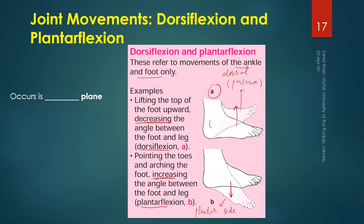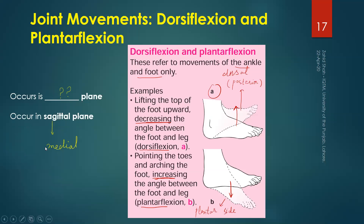You can say that dorsiflexion is basically a form of flexion and plantar flexion is a form of extension, but these specific terms are used for these foot movements. In which plane do dorsiflexion and plantar flexion occur? The answer is the same plane in which flexion and extension occur — the sagittal plane or medial plane, in anatomical position.